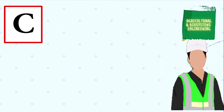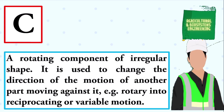A rotating component of a regular shape. It is used to change the direction of the motion of another part moving against it — for example, rotary into reciprocating or variable motion. The answer is cam.